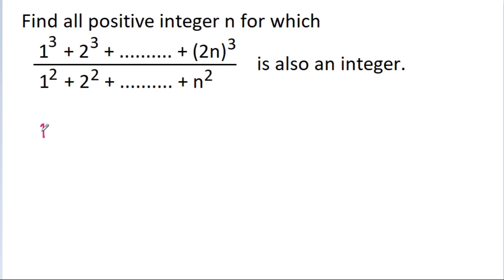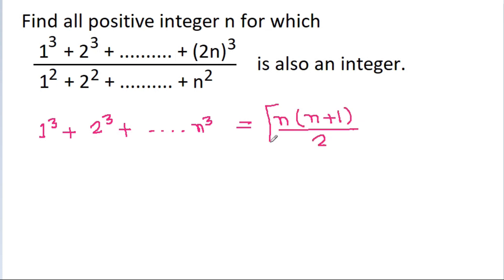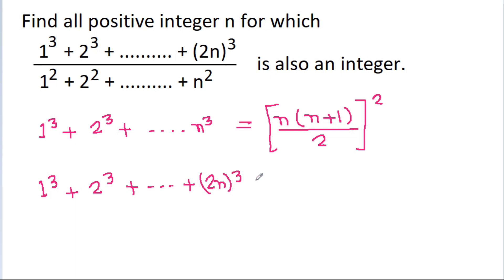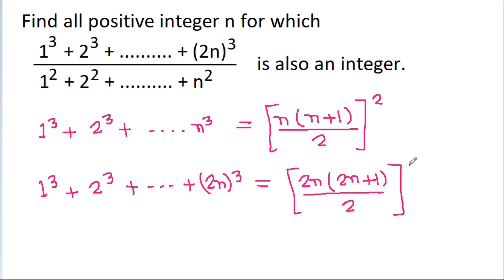We know that 1³ plus 2³ plus up to n³ is equal to n(n+1)/2, whole squared. So, 1³ plus 2³ plus up to (2n)³ will be equal to 2n(2n+1)/2, whole squared.